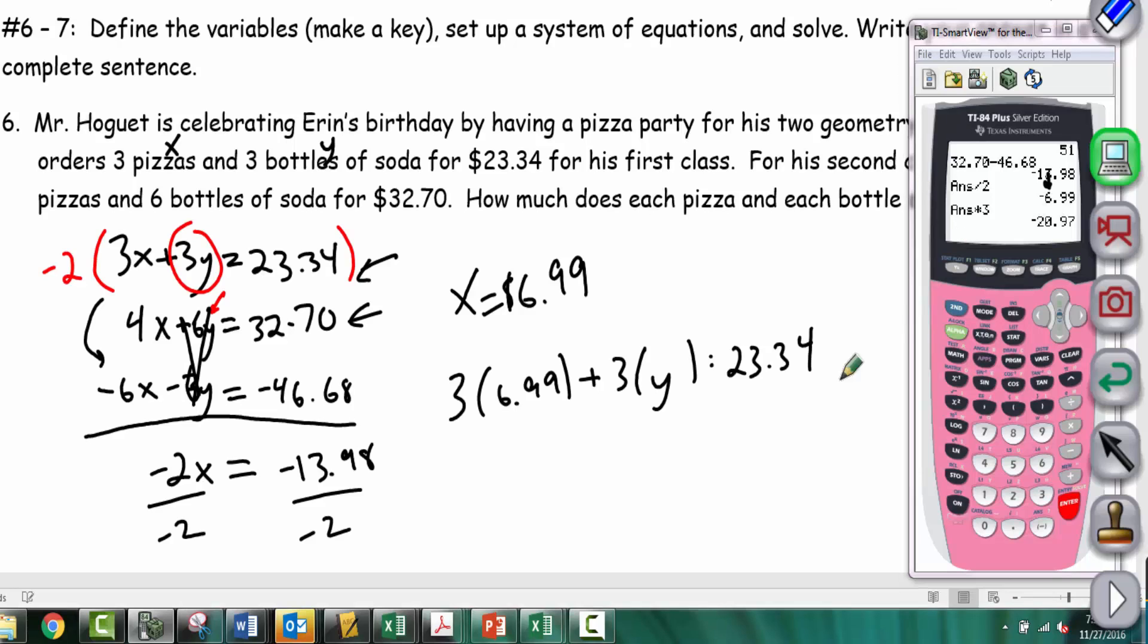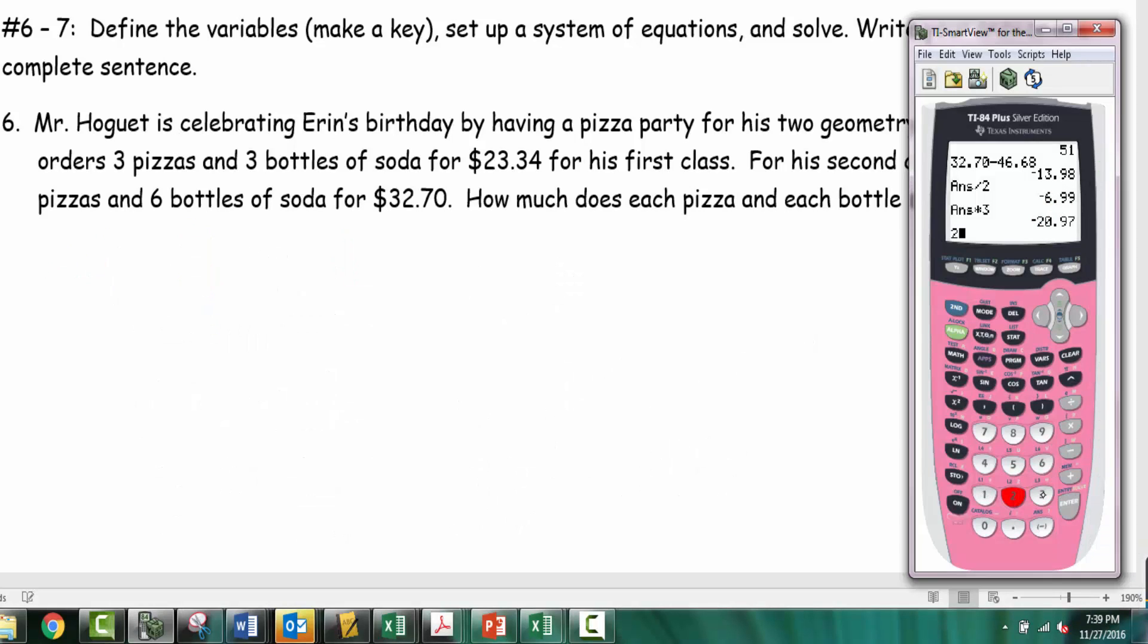That gives us 20.97. So 20.97 + 3y = 23.34. We subtract 20.97 from both sides: 23.34 minus 20.97.